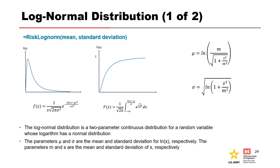The log normal distribution is a continuous distribution for a random variable whose logarithm is normally distributed. If random variable x is log normally distributed, then the natural log of x is normally distributed. The log normal distribution is valid for x greater than zero and cannot be negative. Statisticians typically use the natural log, while engineers sometimes use log base 10 — for example, flood hazard always uses log base 10. It is very important to always document which base is being used.